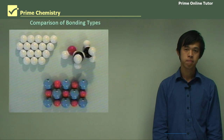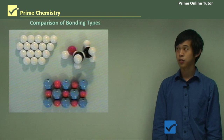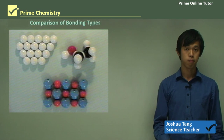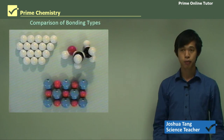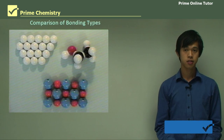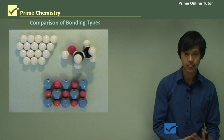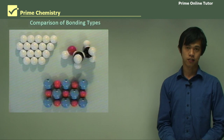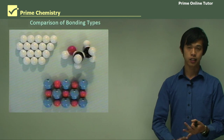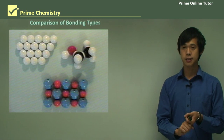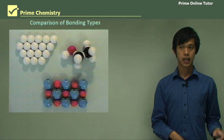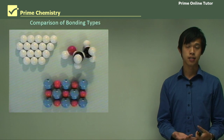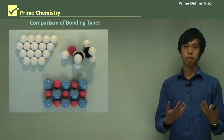Hello everyone, welcome again. Today's lesson will be on the Chemical Earth module in Year 11 Chemistry. In the previous lesson we looked at covalent substances, and in today's lesson we're going to look at a comparison of all the different types of bonding that we've seen: covalent, ionic, and metallic. We're going to see how they're different, how they're the same, and what properties each of them has that make them useful.